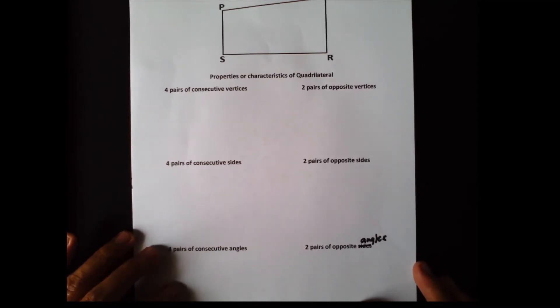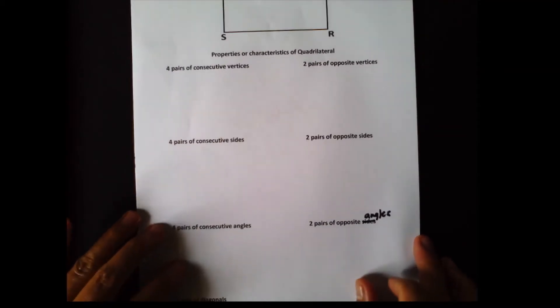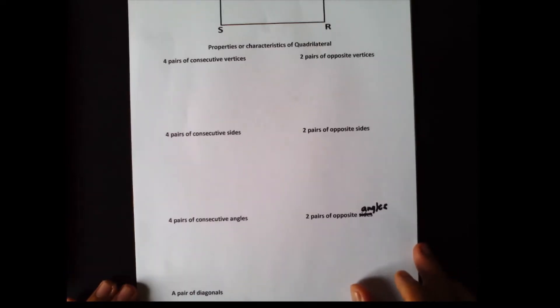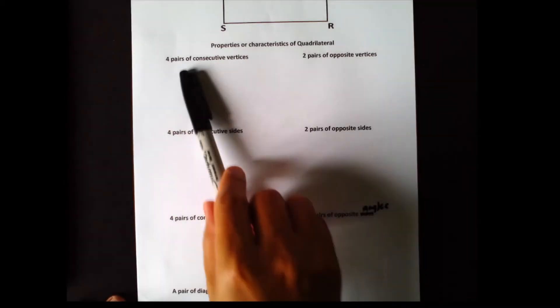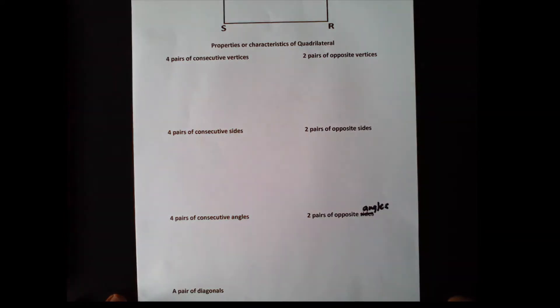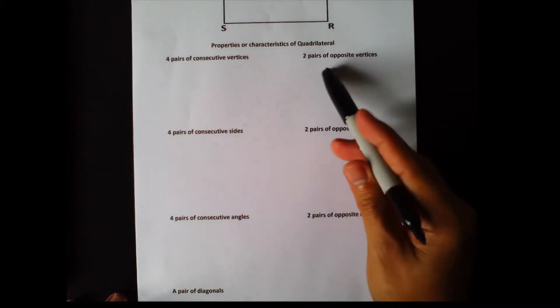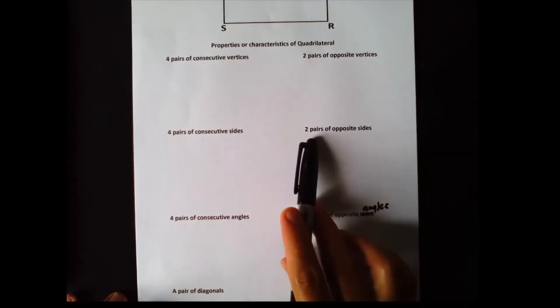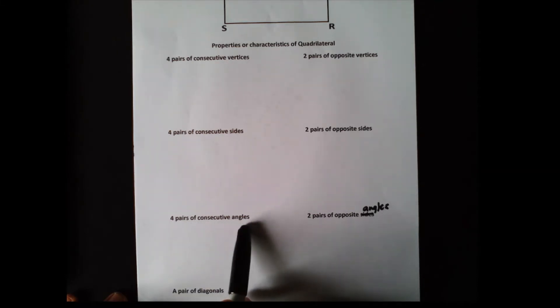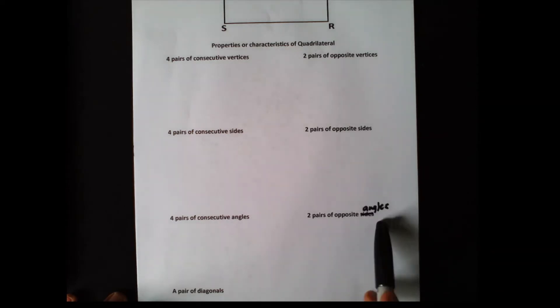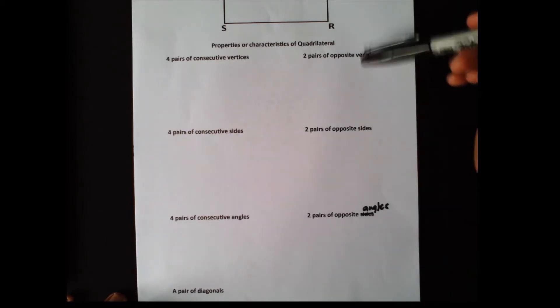A quadrilateral has certain properties or characteristics. These are: 4 pairs of consecutive vertices, 2 pairs of opposite vertices, 4 pairs of consecutive sides, 2 pairs of opposite sides, 4 pairs of consecutive angles, 2 pairs of opposite angles, and a pair of diagonals.